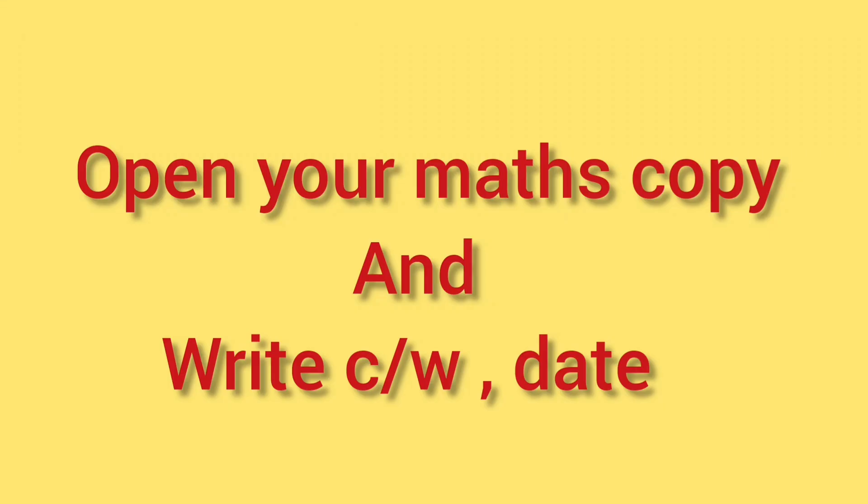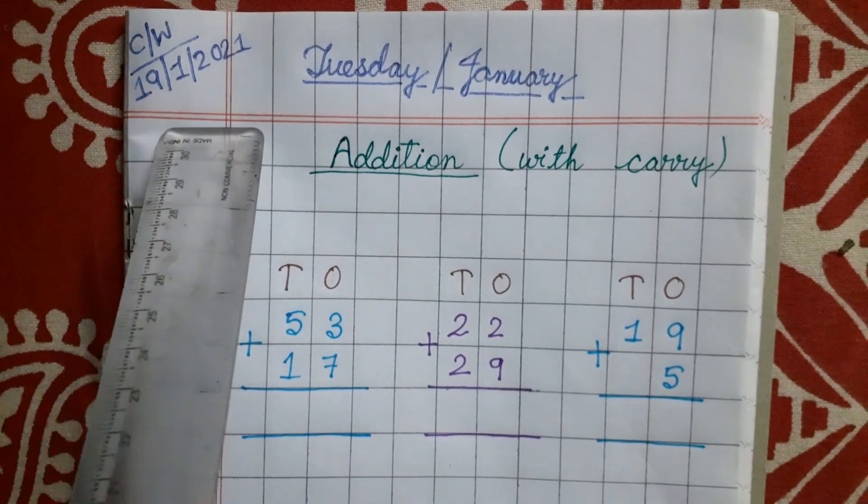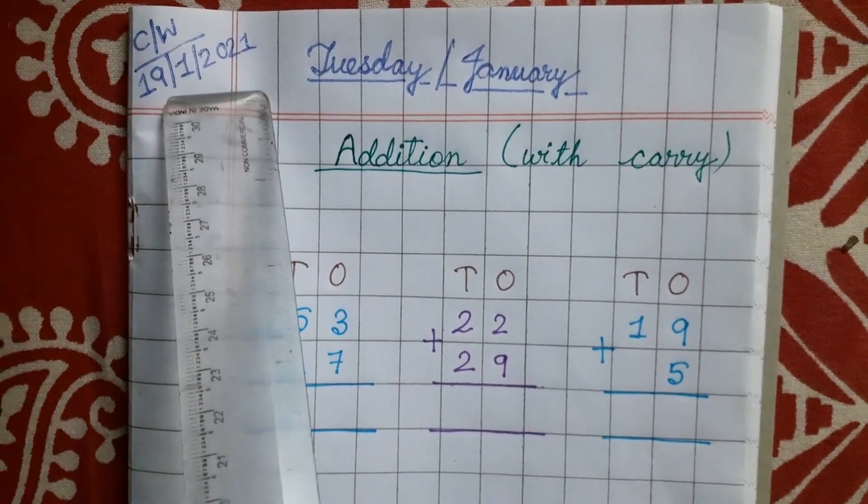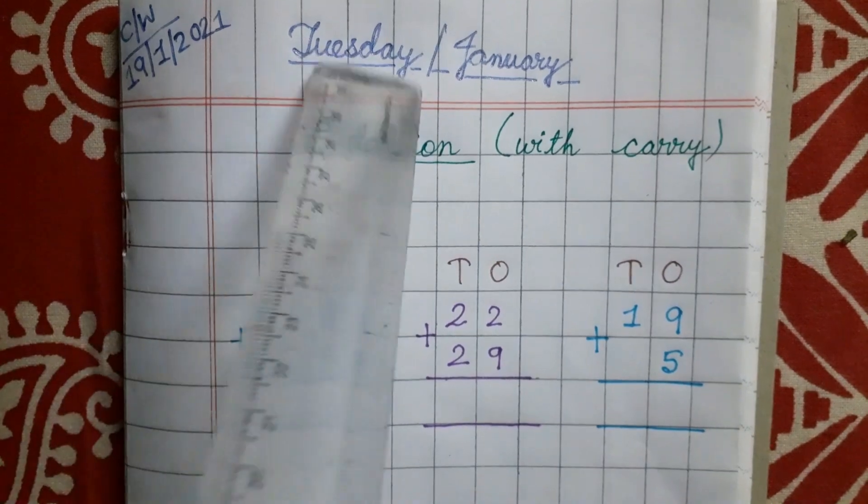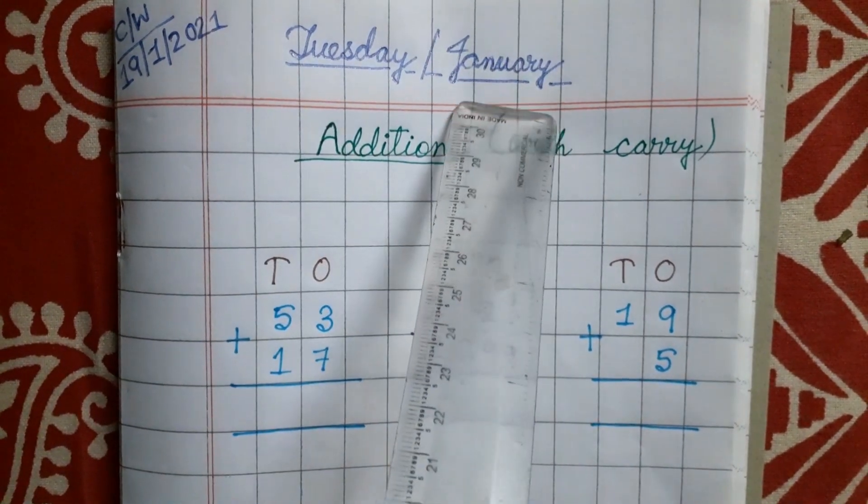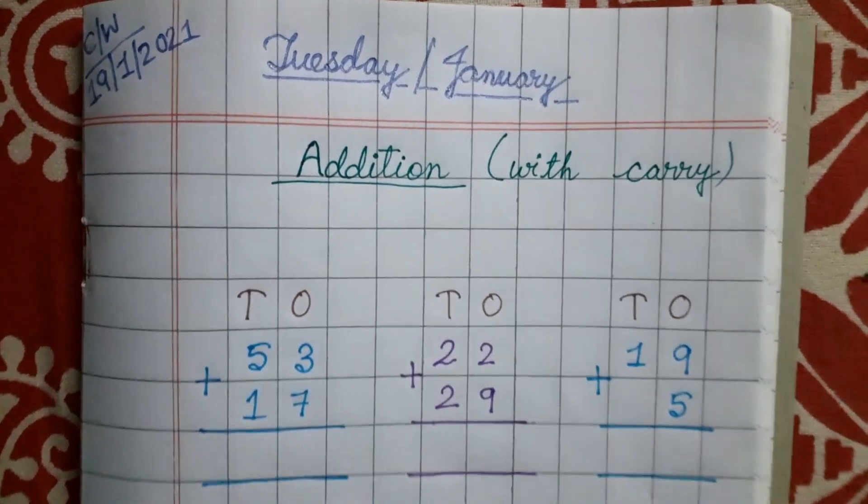Now all of you, please open your maths copy and write CW date, okay? Please open your maths copy. So everybody write the date 19 slash 1 slash 2021 that is 19th January. Tuesday and the month is January. Everybody finish writing. After that, now say after me, okay?